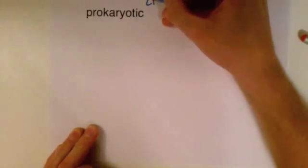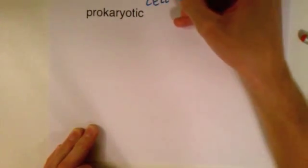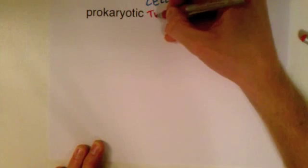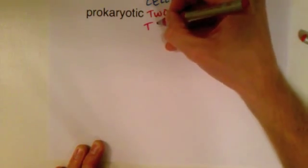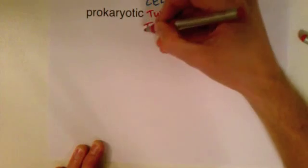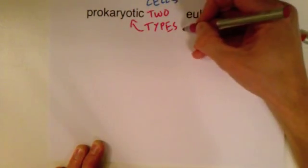Alright, so basically we're going to be looking at cells today and we're going to look deeper into the two main types of cells, which are prokaryotic and eukaryotic.